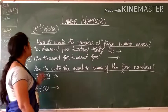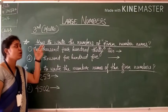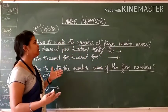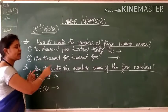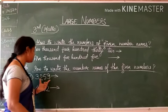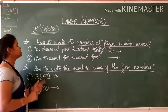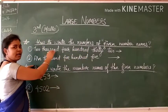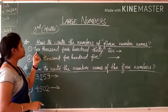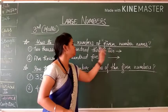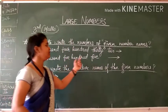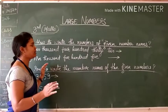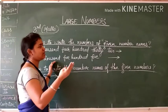Students, now I am going to tell you how to write the numbers of the given number names — meaning, the number names are given and you have to write the numbers. And secondly, how to write the number names of the given numbers — meaning, numbers are given and you have to write the number names. First I am telling you how to write the numbers of the given number names. Two examples I have given: 2,432 and 5,505. In a very easy manner you can write the numbers from these given number names.